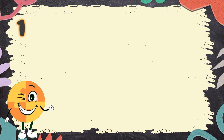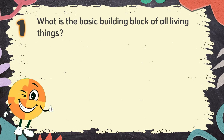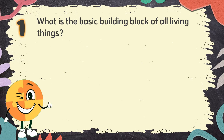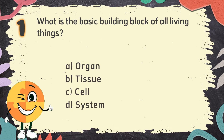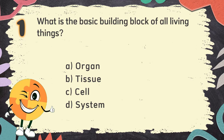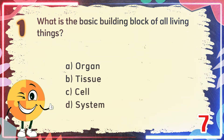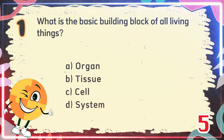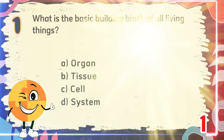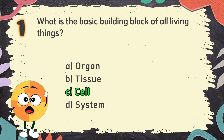Number 1: What is the basic building block of all living things? The choices are: A. Organ, B. Tissue, C. Cell, D. System. The correct answer is C. Cell.